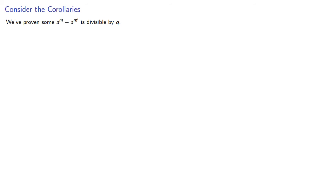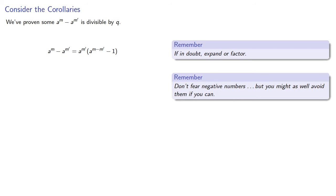Now we've proven the difference is divisible by q. And if in doubt, we can expand or factor. Now the exponent is this difference m minus m prime, and it could be negative. And we shouldn't fear negative numbers, but you might as well avoid them if you can. And in fact, in this case, without loss of generality, we'll assume that m is greater than m prime.